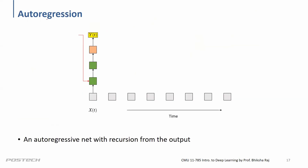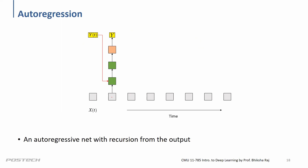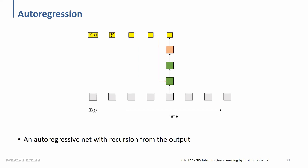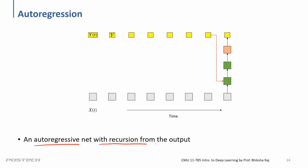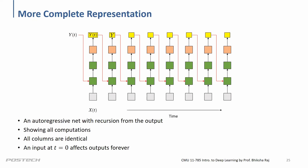We call this an auto-regressive model — because we're using the previous y to predict y, it's an auto-regressive model. From x and the previous y, this function takes these two pieces of information and does some nonlinear mappings to estimate the output. This is an auto-regressive neural net with recursion from the previous outputs to compute a new output.